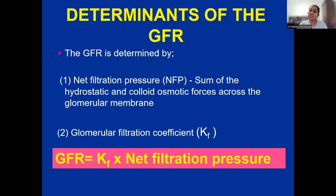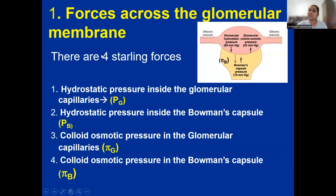What are the determinants of GFR? GFR is determined by two major factors: net filtration pressure and the glomerular filtration coefficient. GFR equals net filtration pressure — that is the sum of hydrostatic and colloid osmotic forces across the glomerular membrane — multiplied by the filtration coefficient. There are four Starling forces across the glomerular membrane operating on GFR.